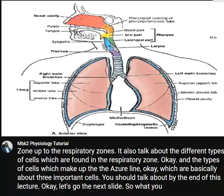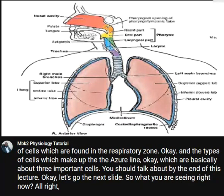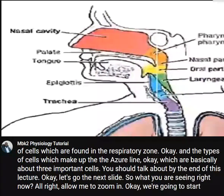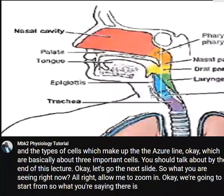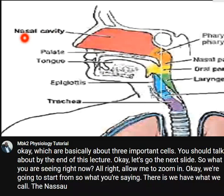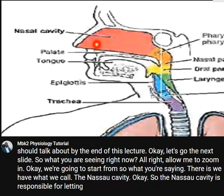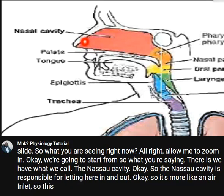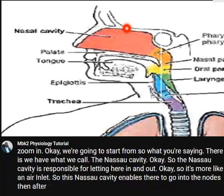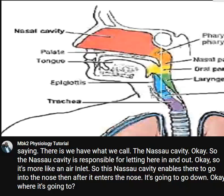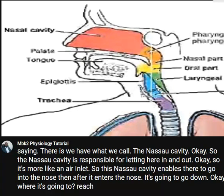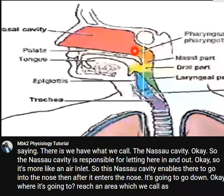What you are seeing right now — allow me to zoom in. We are going to start from what we call the nasal cavity. The nasal cavity is responsible for letting air in and out, so it's more like an air inlet. This nasal cavity enables air to go into the nose, and after it enters the nose it's going to go down to an area which we call the pharyngeal passageway.